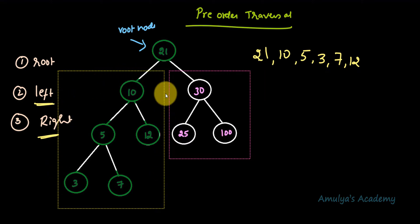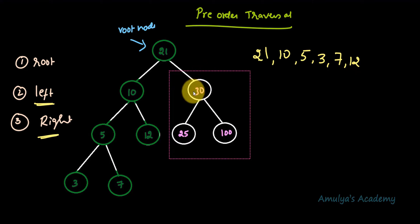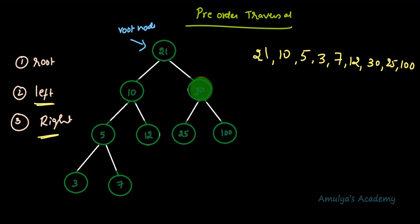We've finished visiting all nodes of the left subtree of the root. Now we move to the right subtree. Applying the same rule — root, left, right — we visit 30, then its left subtree: 25, and finally its right subtree: 100. So the pre-order traversal gives: 21, 10, 5, 3, 7, 12, 30, 25, 100.